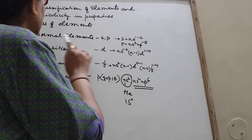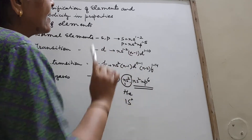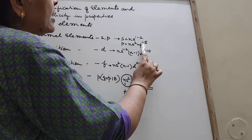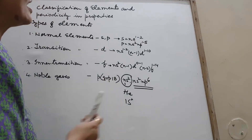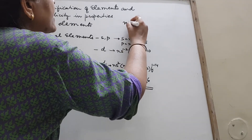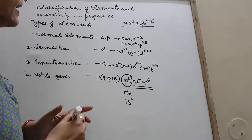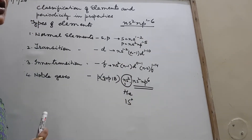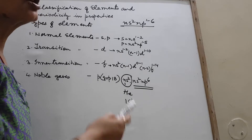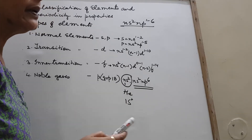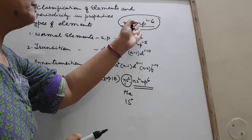To clarify: for normal elements belonging to P block, the configuration is NS2, NP1 to 5. The moment it is NS2, NP6, those are noble gases or inert elements — not normal elements. However, if you are asked the general configuration for all P block elements, the answer is NS2, NP1 to 6, which includes both normal elements as well as noble gases.